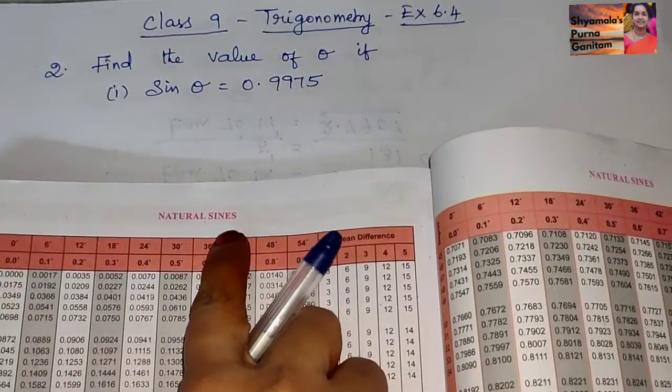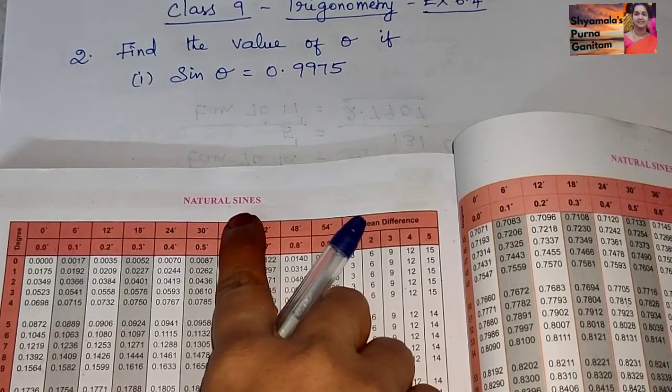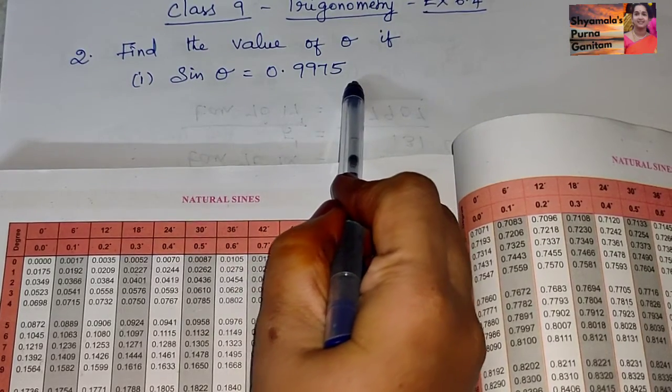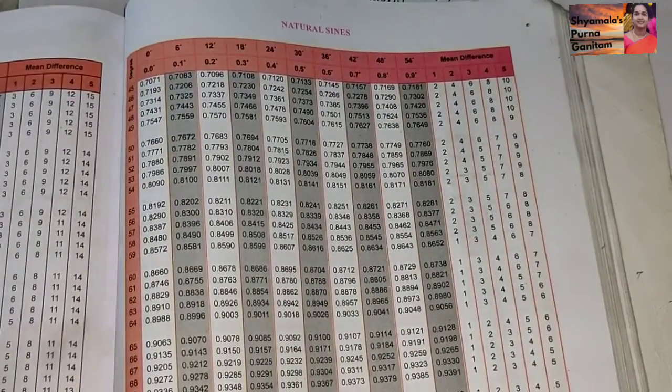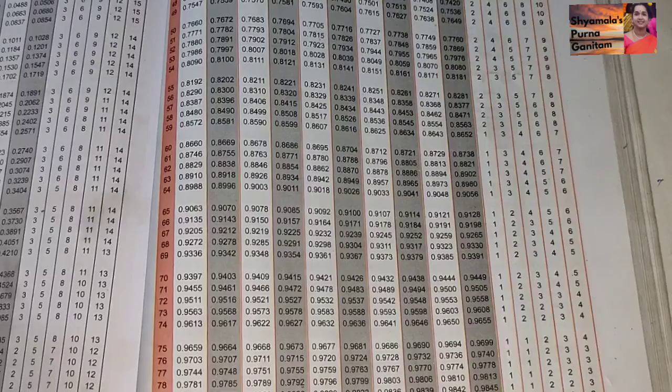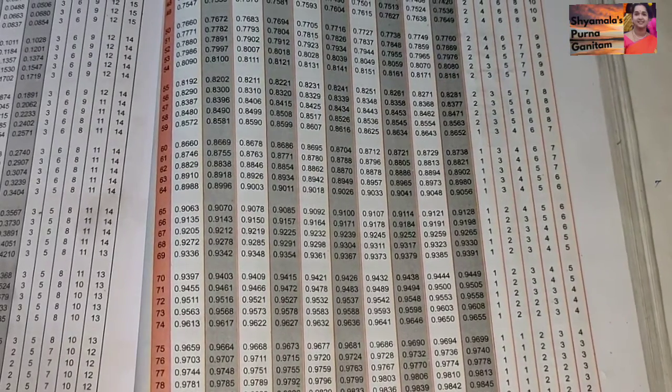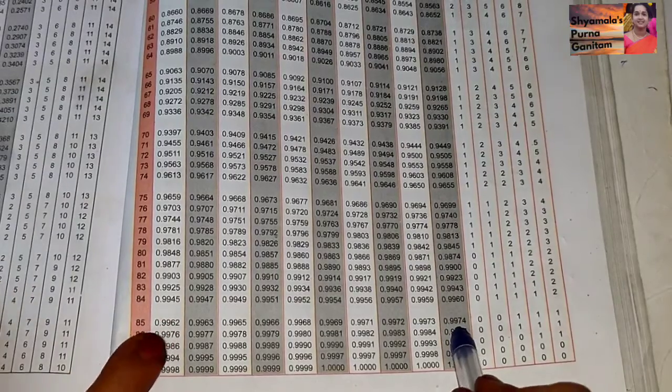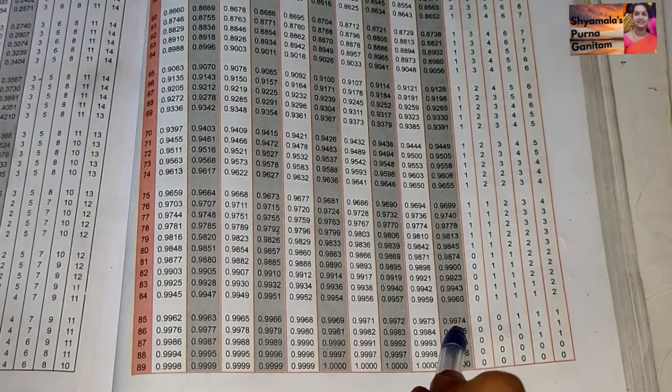We will take sine tables here. We will check 0.9975, where we are getting that 0.9975. See here, 0.9975, 0.9974, 9974.